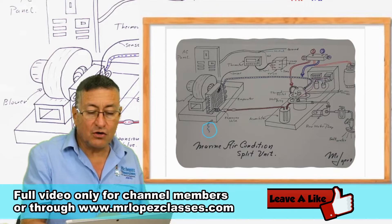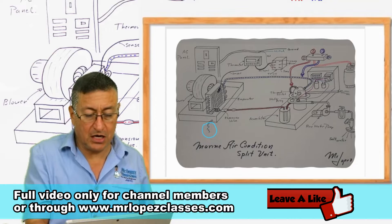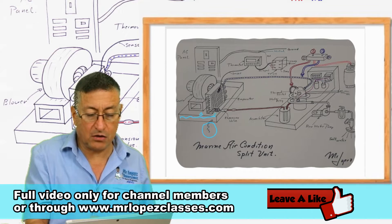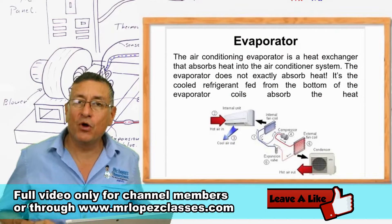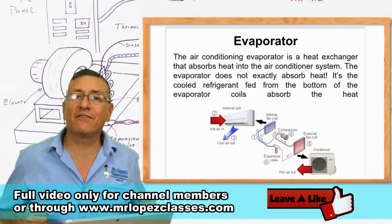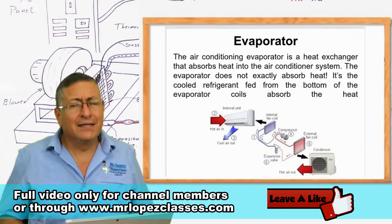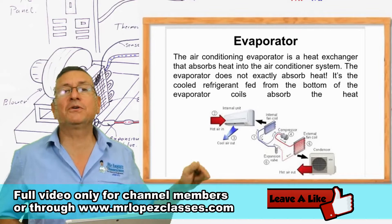Here you have condensation of fresh water — fresh water accumulates here due to condensation. Remember, the boiling point of the refrigerant is minus 22 degrees Fahrenheit, and at that very low temperature it starts to boil.